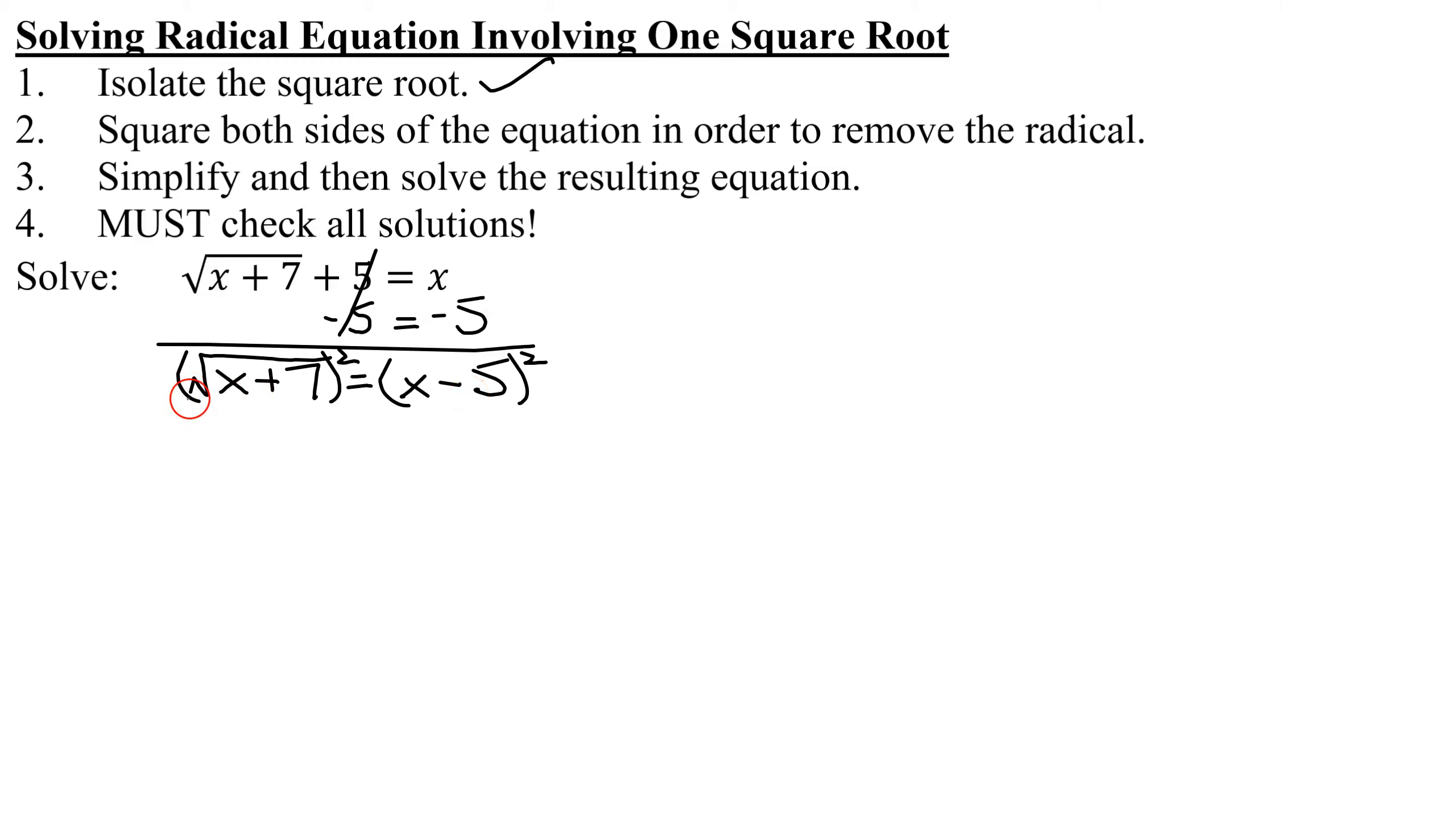And now on the left-hand side, what do you get when you square a square root? They undo each other and you just get left with the radicand, which in this case is x plus 7. And that equals x minus 5 all squared, which can be done two separate ways. One is going back to basics. What does x minus 5 all squared mean? It's just x minus 5 times x minus 5. And how do we multiply two binomials? You use FOIL.